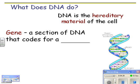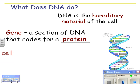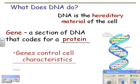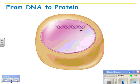DNA is the hereditary material of the cell. A gene is a section of DNA that codes for a protein. When you look at an organism, you're essentially looking at its proteins and protein products. All of those proteins, and all the enzymes which are also proteins, are coded for in the DNA — and those coding parts are called genes. So genes control a cell's characteristics.